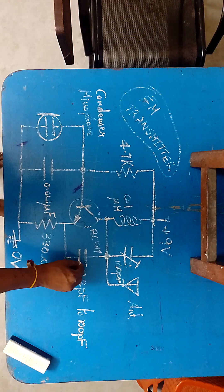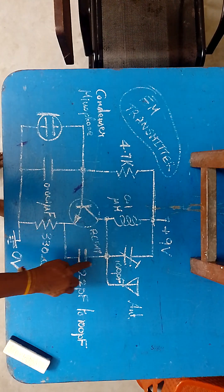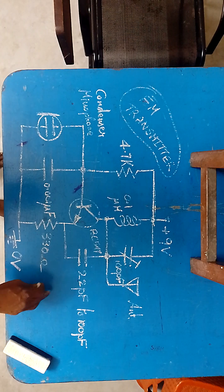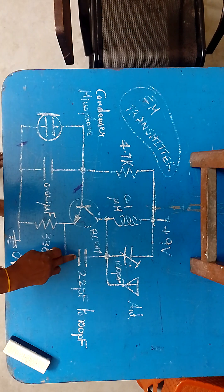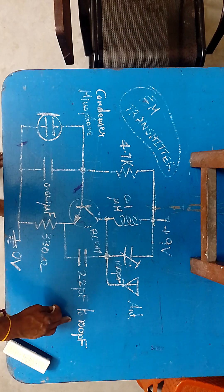Here we have a feedback capacitor coupling from collector to emitter which is also a variable trimmer capacitor ranging from 22 pico farad to 100 pico farad.